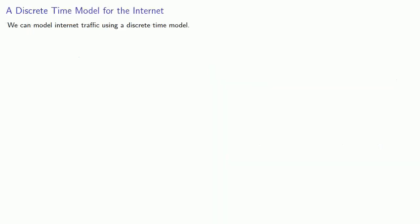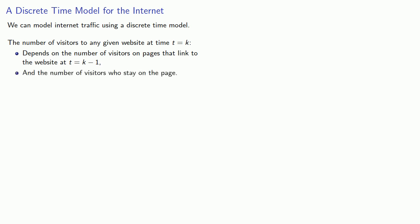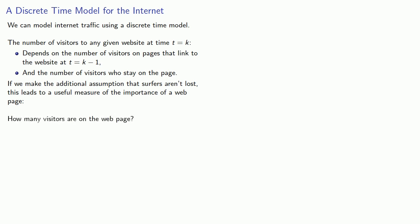We can model internet traffic using a discrete time model. The number of visitors to any given website at time t = k depends on the number of visitors on pages that link to the website at t = k - 1. It also depends on the number of visitors who stay on the page. If we make the additional assumption that surfers aren't lost, this leads to a useful measure of the importance of a web page: how many visitors are on the web page.